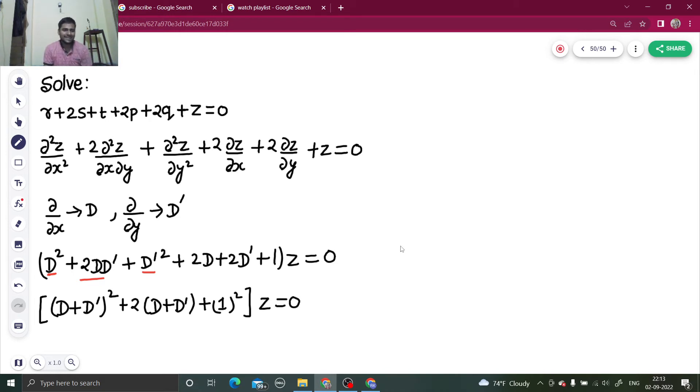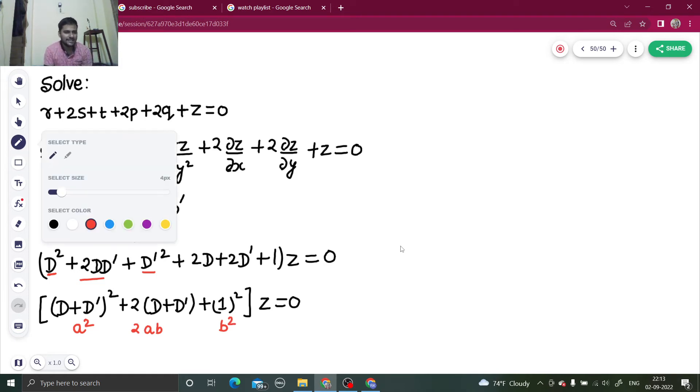Now again it's an interesting thing because if you imagine this as a, this as b, and this as 2ab, so this is a square, this is a square, this is b square, this is 2ab.